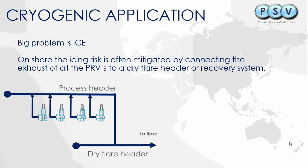Connecting to a flare header may create back pressure. Depending on the types and number of valves, we may have different continuous or variable back pressures. If that back pressure is higher than what a conventional valve can operate in, we'd start looking for the next type of valve — and the obvious choice would be balanced bellows valves, which is really what we want to talk about today.